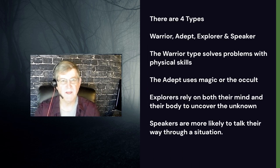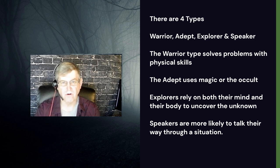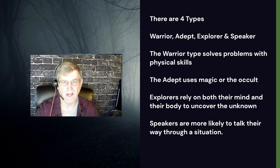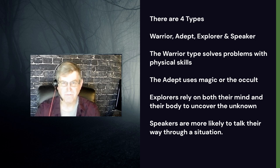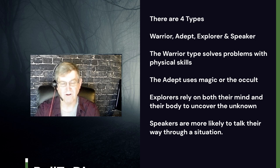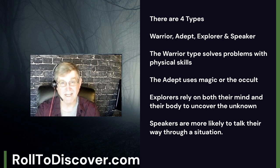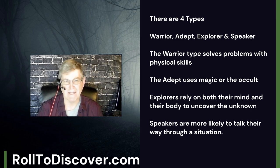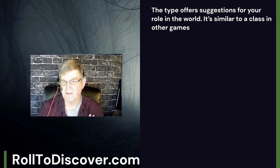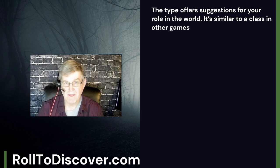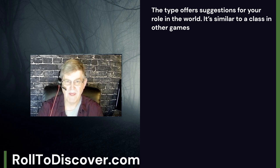There are four types: warrior, adept, explorer, and speaker. The warrior type solves problems with physical skills. The adept uses magic or the occult. Explorers rely on both their mind and their body to uncover the unknown. Speakers are more likely to talk their way through a situation. I won't explain every option — I'll put all that information on the Role to Discover website at roletodiscover.com. The type is the noun of our Mad Lib sentence and offers suggestions for your role in the world, similar to a class in other games.